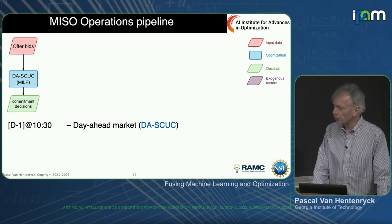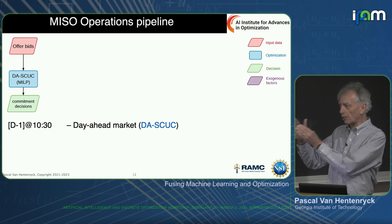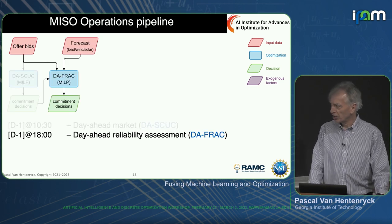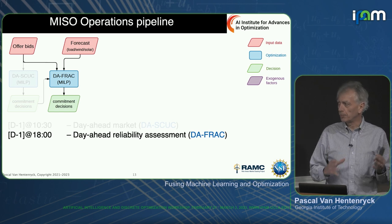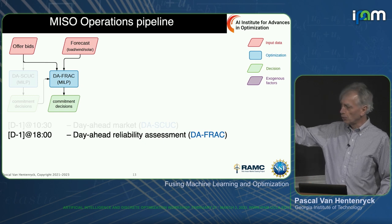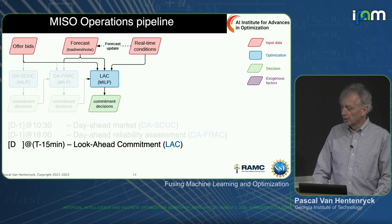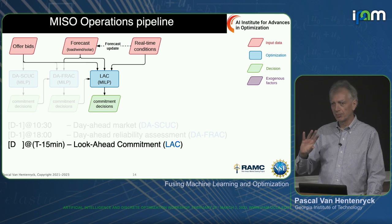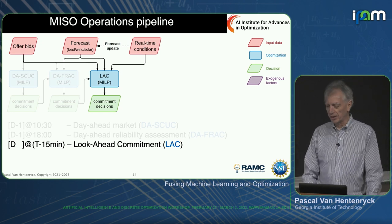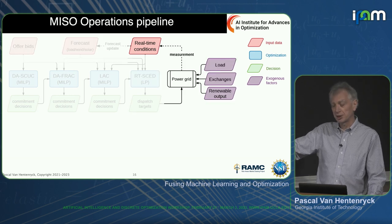This is a crash course on how systems in the U.S. work. The day before, around 10:30, every generator and load submits bids. You have the security-constrained unit commitment, which decides which generators are committed for the next 24 hours. About six to seven hours later, you have the reliability commitment, which uses forecasts in addition to bids to ensure reliability. Then every 15 minutes you have another reliability commitment for fast-starting generators, and finally the real-time market is executed every five minutes.